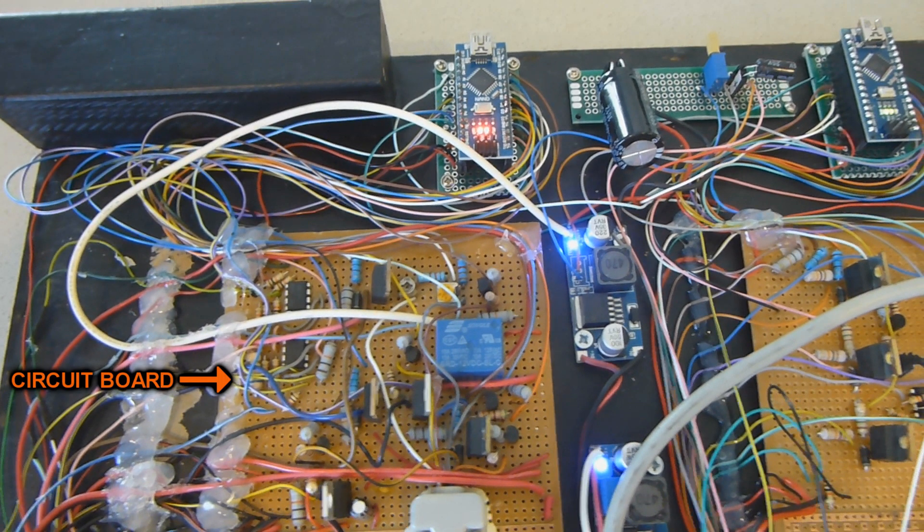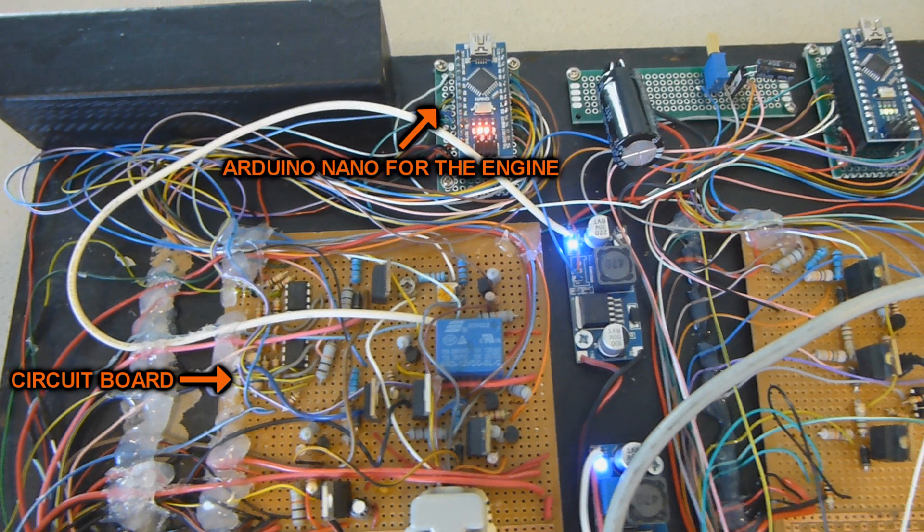This is the main circuit board that is mostly populated by transistors and resistors, so the Arduino Nano can control those high current components.